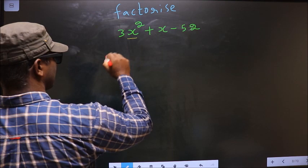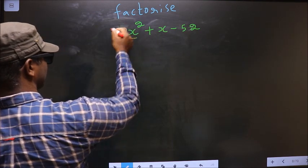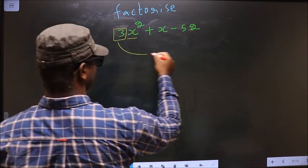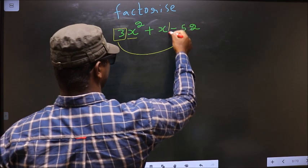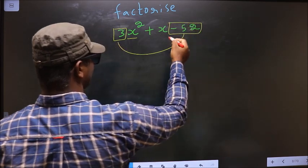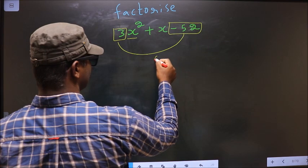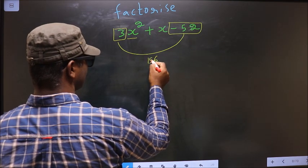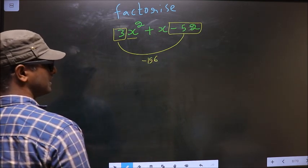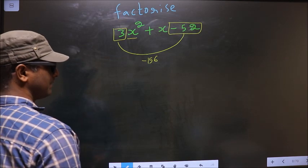Coefficient of x², that is 3 here, should be multiplied to the constant, that is -52. So 3 into -52: 3 times 6, 3 times 5 is 15, we get -156. This is our step 1.